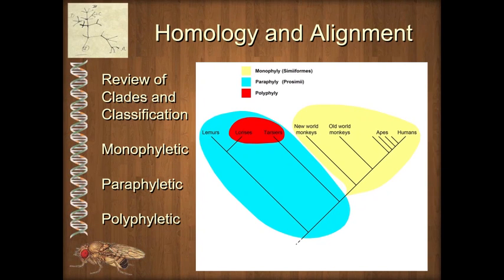In this discussion, we're going to talk about homology. Homology is really central to all of what we are going to be doing through the rest of the semester. It's the foundation — the way that we establish how we compare different features in one organism to another. If we can't make a direct comparison between two features, whether it's a forelimb or a piece of DNA, then we can't look at how organisms are connected to one another. We have to be able to establish those homologies.